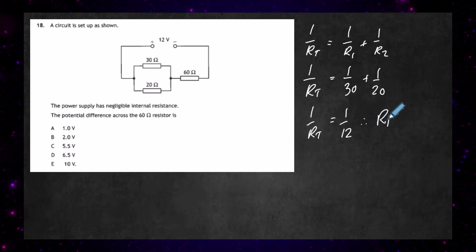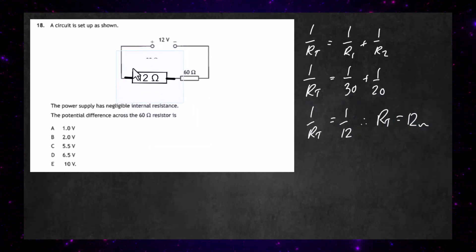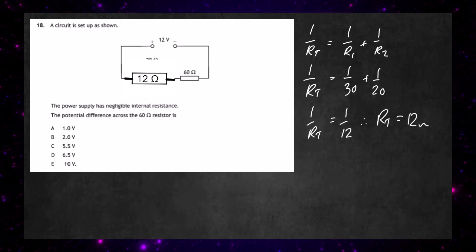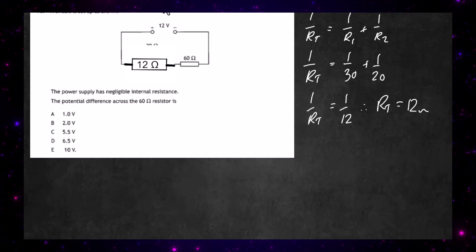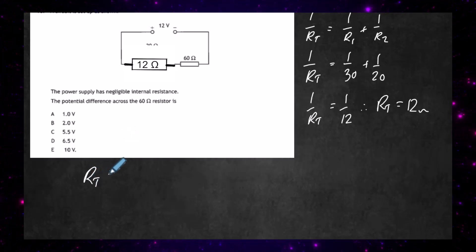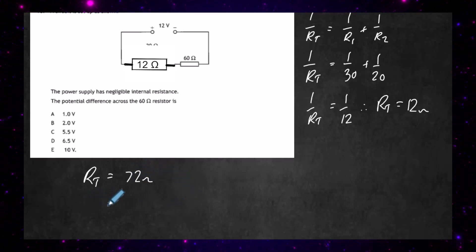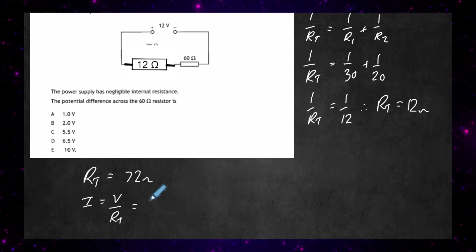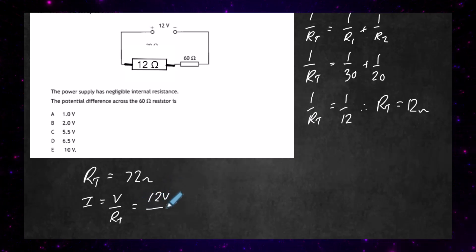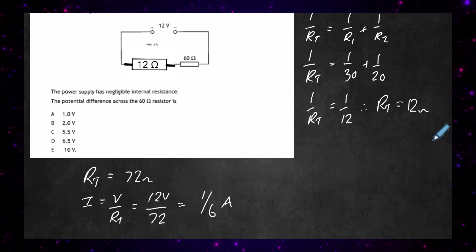We can now replace the two parallel resistors with a single 12 Ω resistor, making the circuit simpler. We have 12 Ω in series with 60 Ω, so the total circuit resistance is 72 Ω. The current in the circuit is voltage divided by total resistance: 12 V ÷ 72 Ω = 1/6 A. I'll keep it as one sixth of an amp to make the calculations easier.